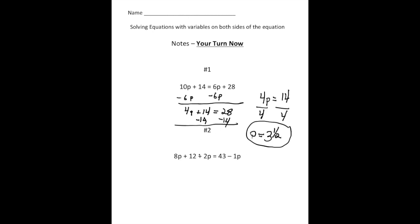All right. Now the next one, there's one step we have to do first before we solve. And notice the left-hand side, we can simplify because we have an 8P and a 2P. So 8P and 2P together add up to 10P.